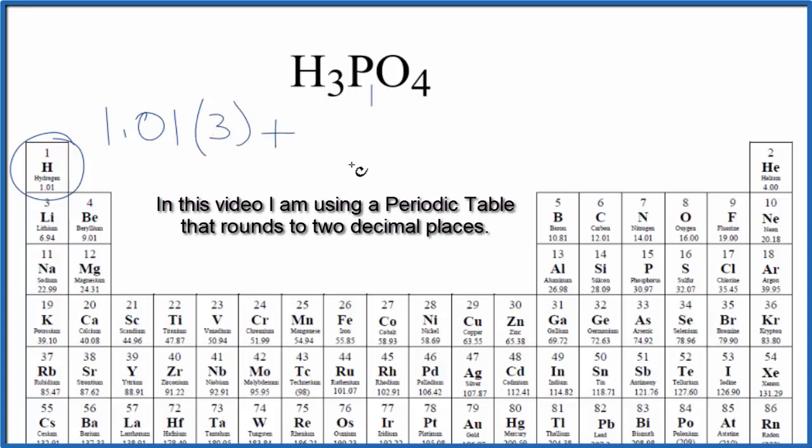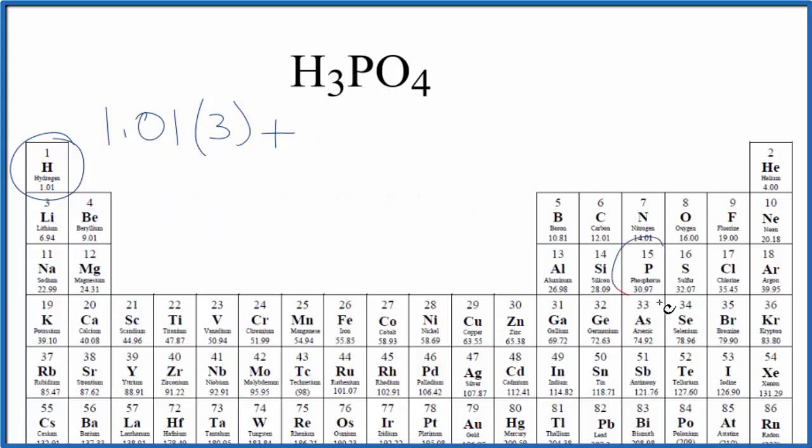Then phosphorus, there's only one of those. Phosphorus, 30.97 grams per mole, and then oxygen, 16.00 grams per mole. We have four oxygen atoms, so we multiply that by four.